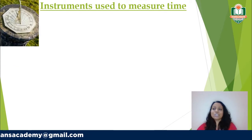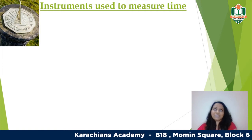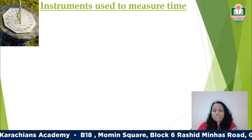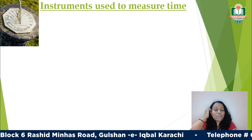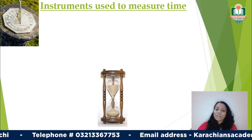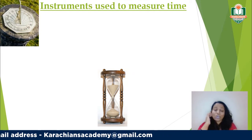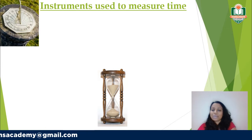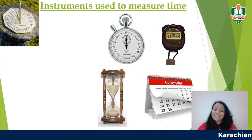Looking at the instruments used to measure time: the sundial was used initially, depending on the position of the sun and the shadow it cast. But it's not accurate — if it's raining or cloudy, it won't work, and the duration of days varies by location. The hourglass was used next, but it was also not very accurate as the amount of sand falling could not be kept constant.